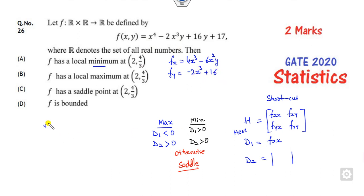Now you can find the value of H. What is Fxx? That is 12x² - 12xy, so I can take 12x common: 12x(x - y). What is Fxy? This is -6x²,